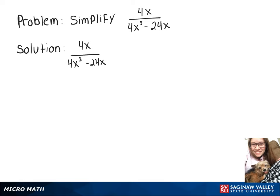In this video we want to simplify 4x over 4x cubed minus 24x. The top part we can leave alone for now, and on the bottom we can factor out a 4x, which leaves x squared minus 6.